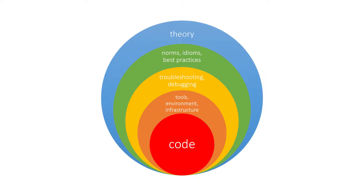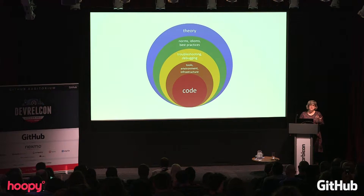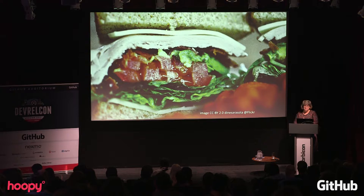Maybe instead of a stepped pyramid, we want something like a core sample. When you're running a demo or tutorial, you're not stepping up — you're drilling through all the layers. Your tutorial is going to have a slice of each of these layers, and some slices may be thicker than others, but all of them should be included. Nobody says 'I'm going to teach you how to make a sandwich, but we're going to start by just eating a slice of turkey to keep things manageable.' That's not how sandwich-making works.